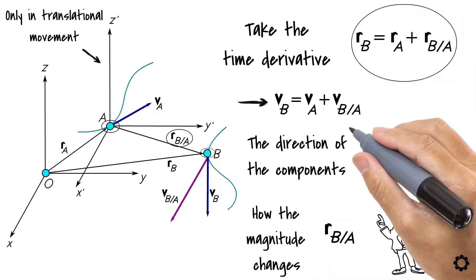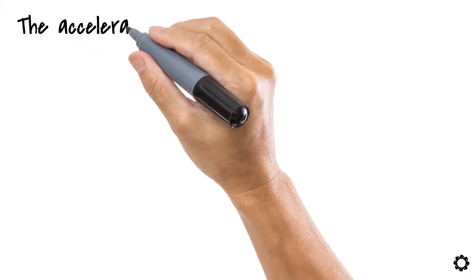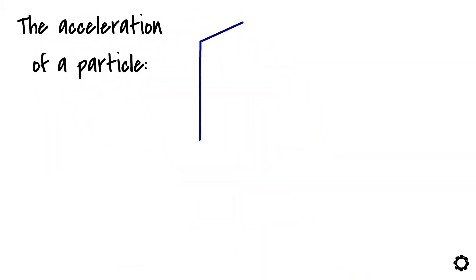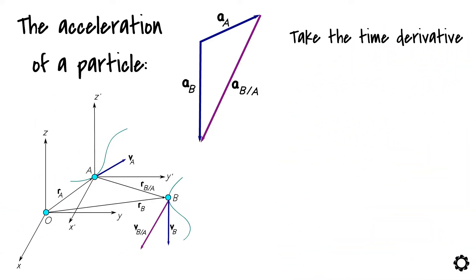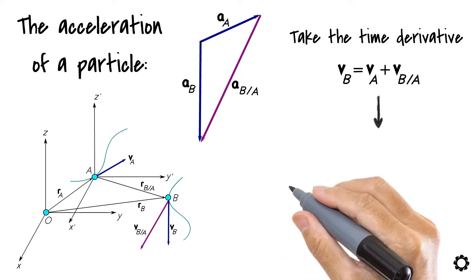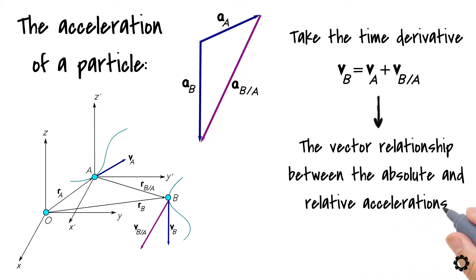In addition to the position and velocity of the particle, we need to usually also consider the acceleration of a particle, which includes the absolute and relative components in the case of relative motion. If we take the time derivative of the equation related to the velocities of the particle, we obtain the vector relationship between the absolute and relative accelerations of both particles A and B as follows: aB equals aA plus aB/A.